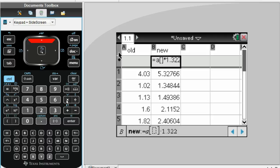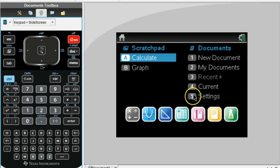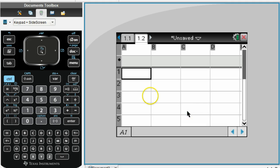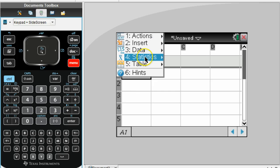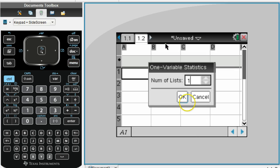Now what we're going to do is we're going to figure out what our mean, median, mode, all those items are. And we're going to be able to fill out that table that should be in your notes. To do that, I don't want to have a whole bunch of other numbers on this page, so I'm going to go to a new spreadsheet. And then we go to menu, statistics, stat calculations. And we want the very first one, one variable statistics. Hit OK.